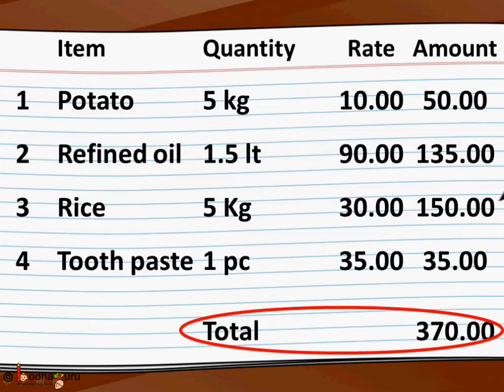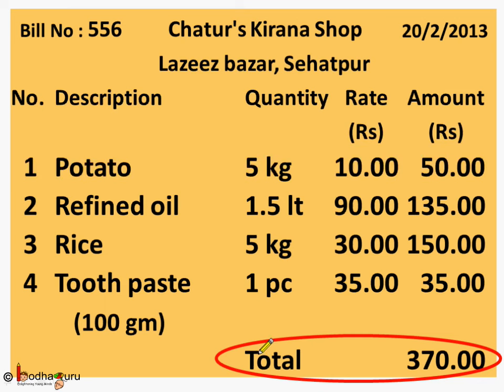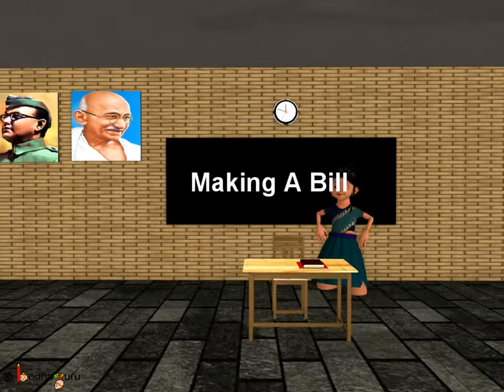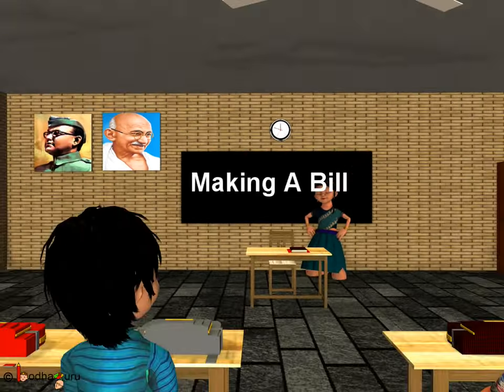Let's look at the bill again — here too the total is Rs. 370. So now you know how to make a bill. Not just understand, but you are able to generate a bill yourself. That's all for now. Bye-bye children.